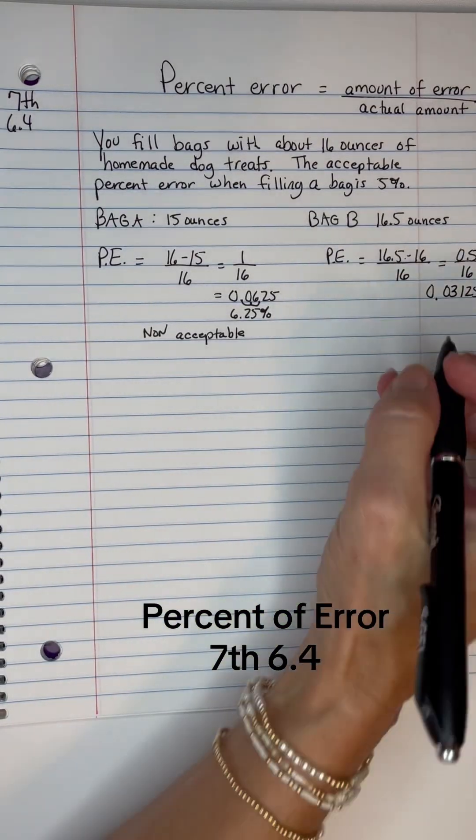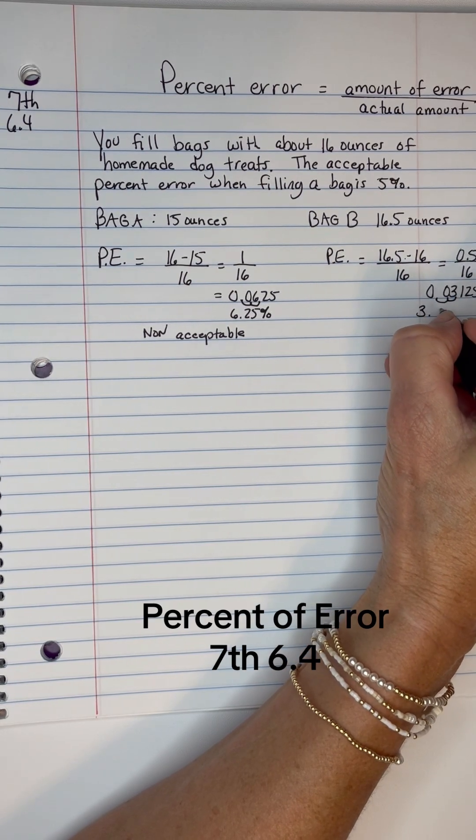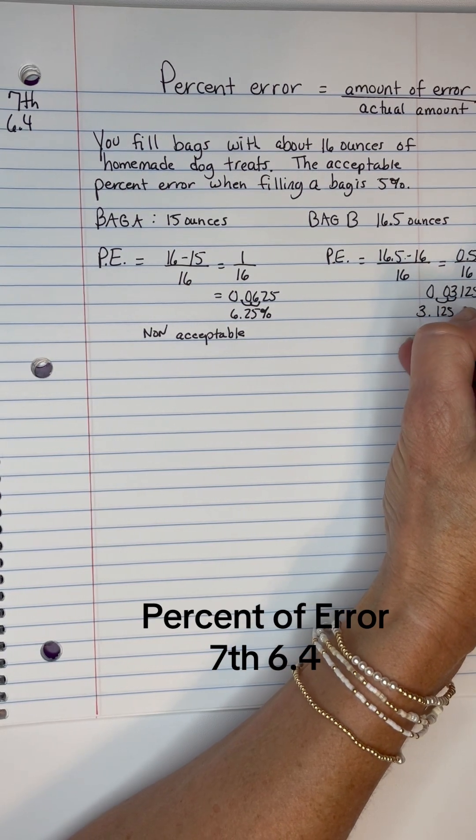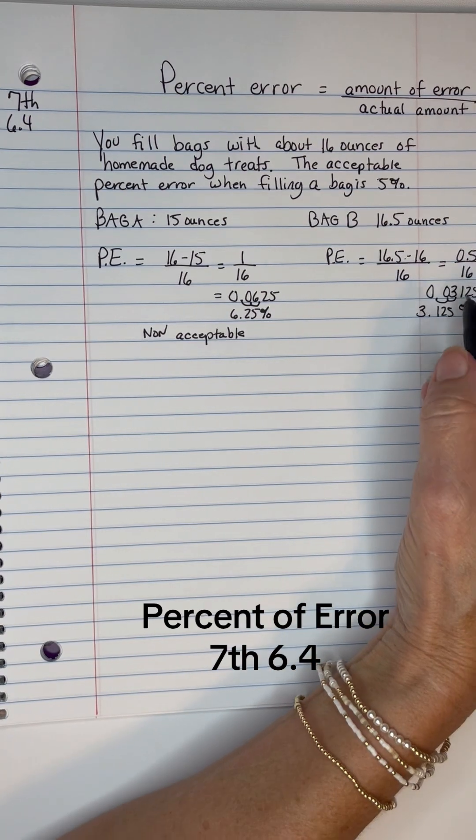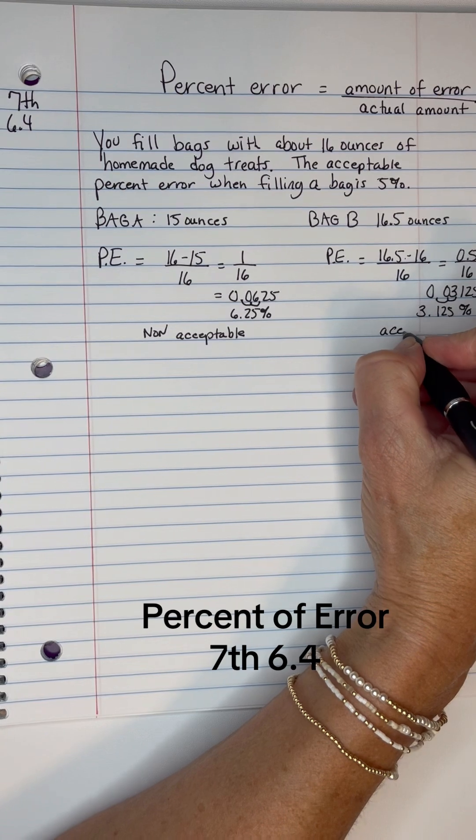And then if we move that decimal two places to the right, that's 3.125%. So this one is less than 5%. So this is an acceptable error.